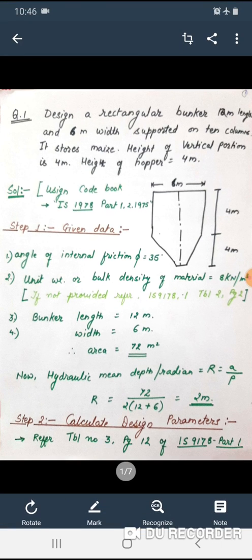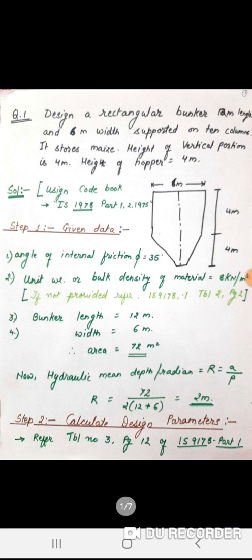Now the hydraulic mean depth, or radius R, is equal to A divided by B — that is area divided by perimeter. The area is 72 divided by 2 into (12 plus 6), which gives us R equal to 2 meters.